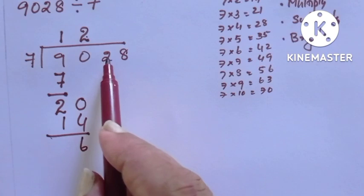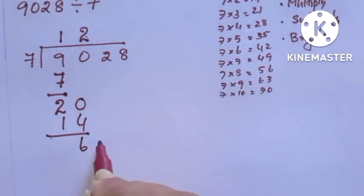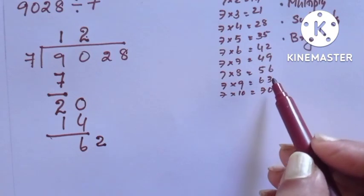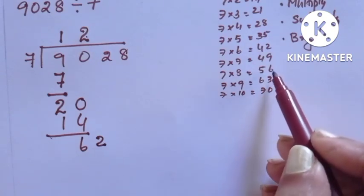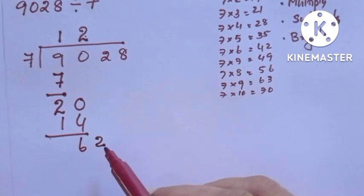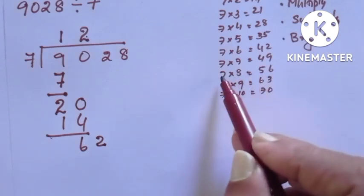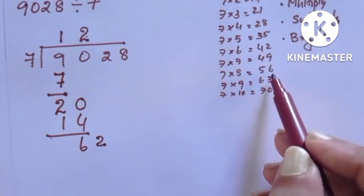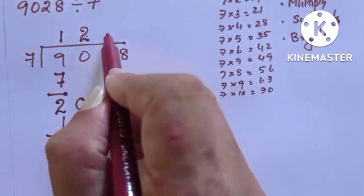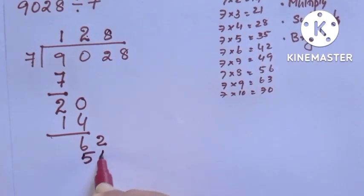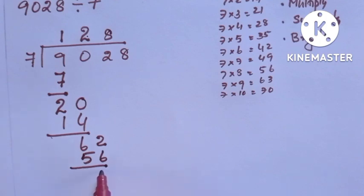Next step: bring down the next digit. We bring down 2, so now we have 62. Where is 62 in the table of 7? We see 63 and 56. We need the number less than 62, which is 7 into 8 equals 56. We write 8 in the quotient and write 56 below. Subtracting, we get 6.